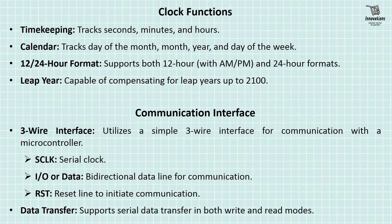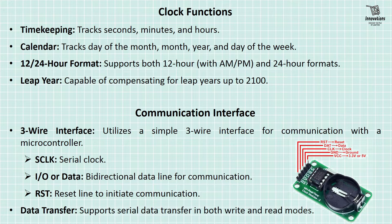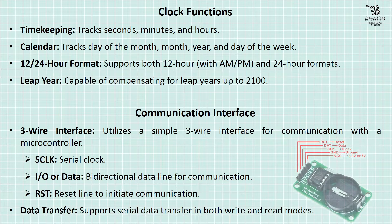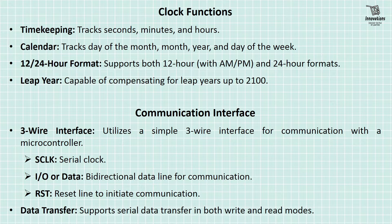The communication interface of the DS1302 module utilizes a simple three-wire interface for communication with a microcontroller. The three pins are: clock — that is the serial clock or SCLK; IO or data pin — a bi-directional data line for communication; and RST pin — the reset line to initiate communication. Data transfer mode is serial data transfer in both write and read modes.